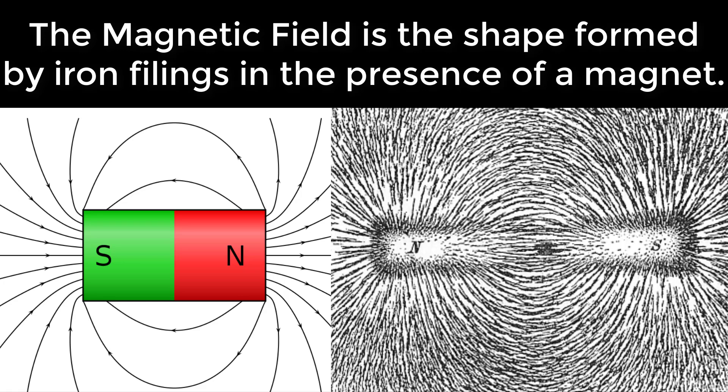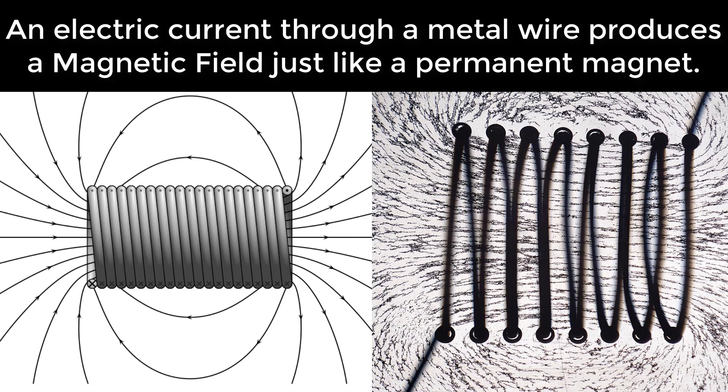The magnetic field is the shape formed by iron filings in the presence of a magnet. An electric current through a metal wire produces a magnetic field just like a permanent magnet.